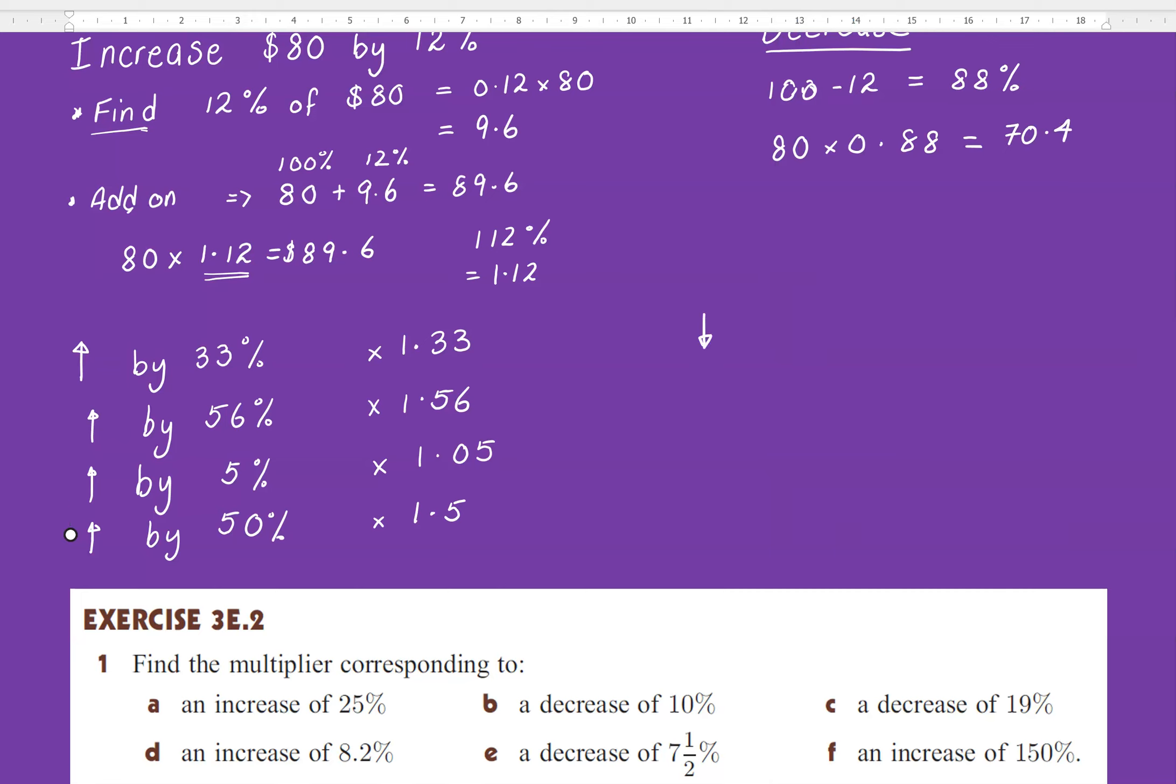So now, when I decrease by 33%, my multiplier is going to be, what is 100 take 33? Well, 67. So I'm going to multiply by 0.67. If I decrease by 56%, once again, what does 100 take 56? So 44, so 0.44. Decrease by 5%, 0.95.